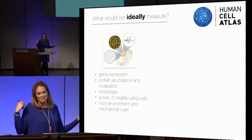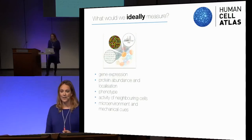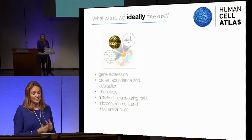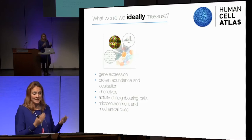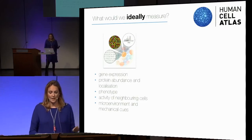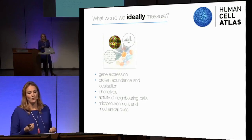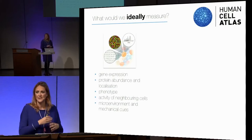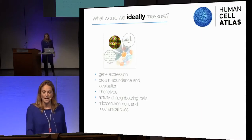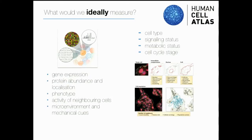In my ideal world, what would I like to measure in every single cell at any instant in time? I would like to look at gene expression and protein abundance and localization, because this brings us much closer to the phenotype — which is my definition of cell type. I'd also want the activity of the neighbors, the macro environment, and the mechanical cues of the surrounding tissue, as these clearly drive many differentiation steps and inform us about signaling status and metabolic status.